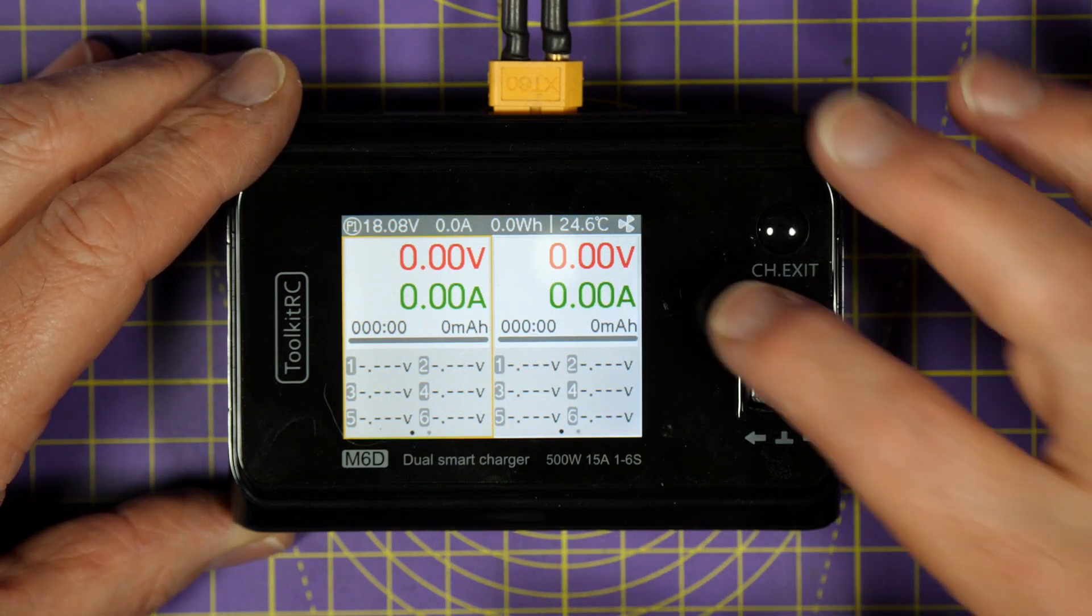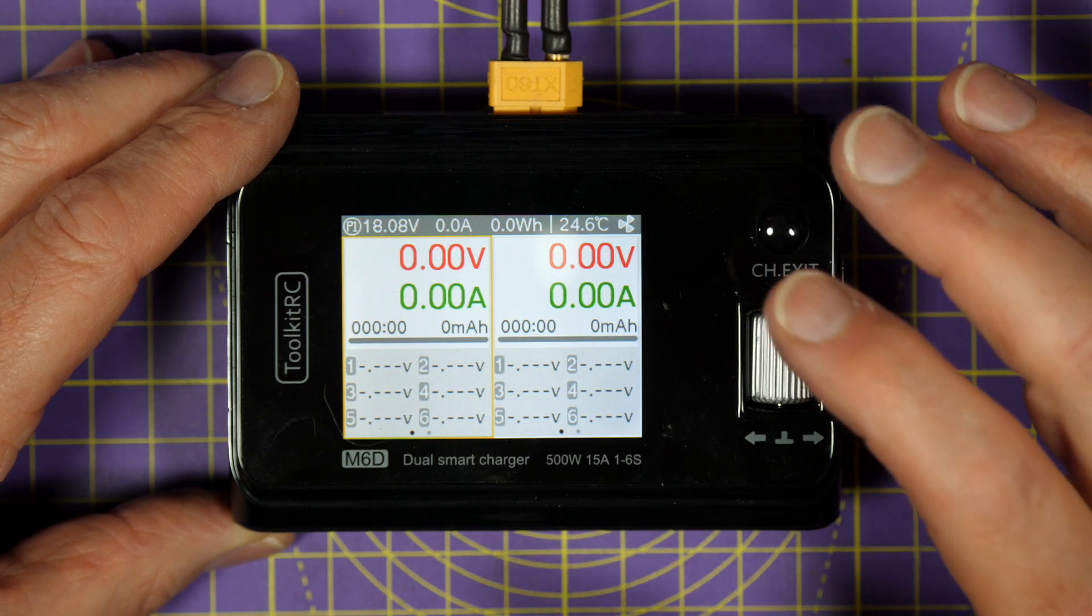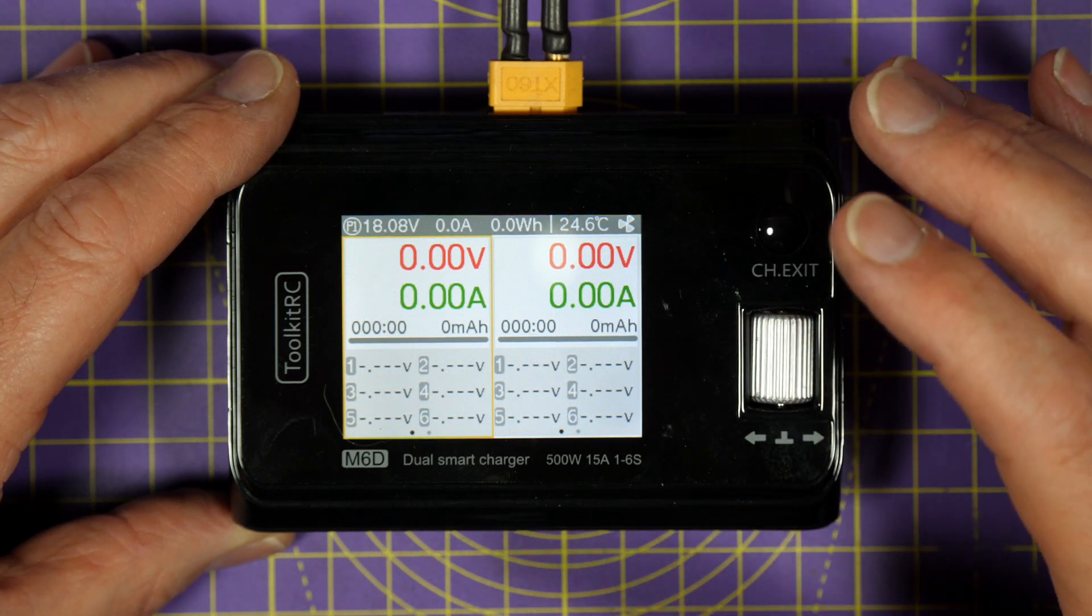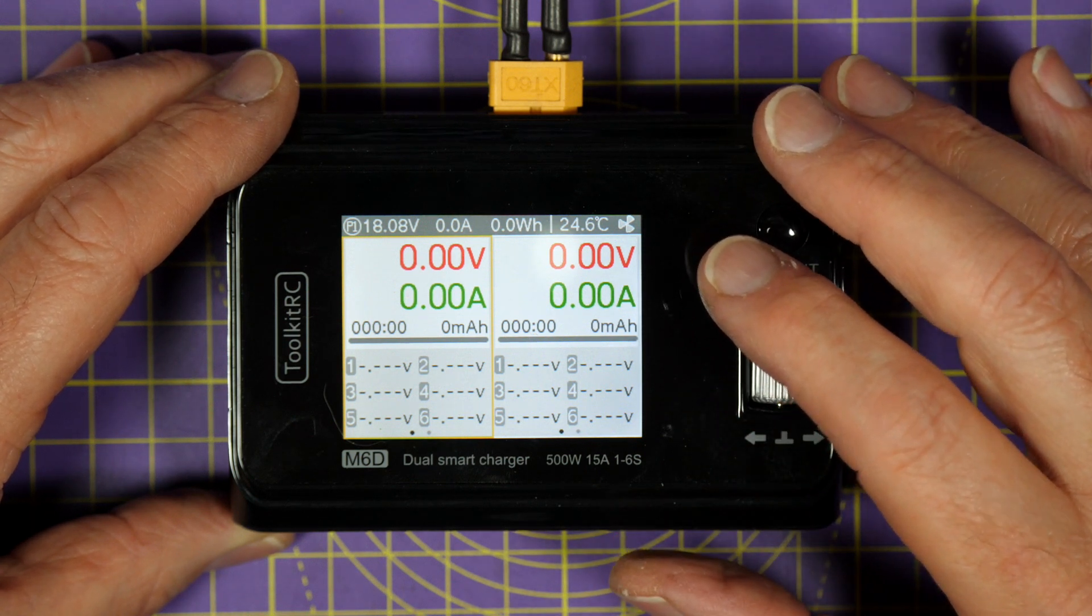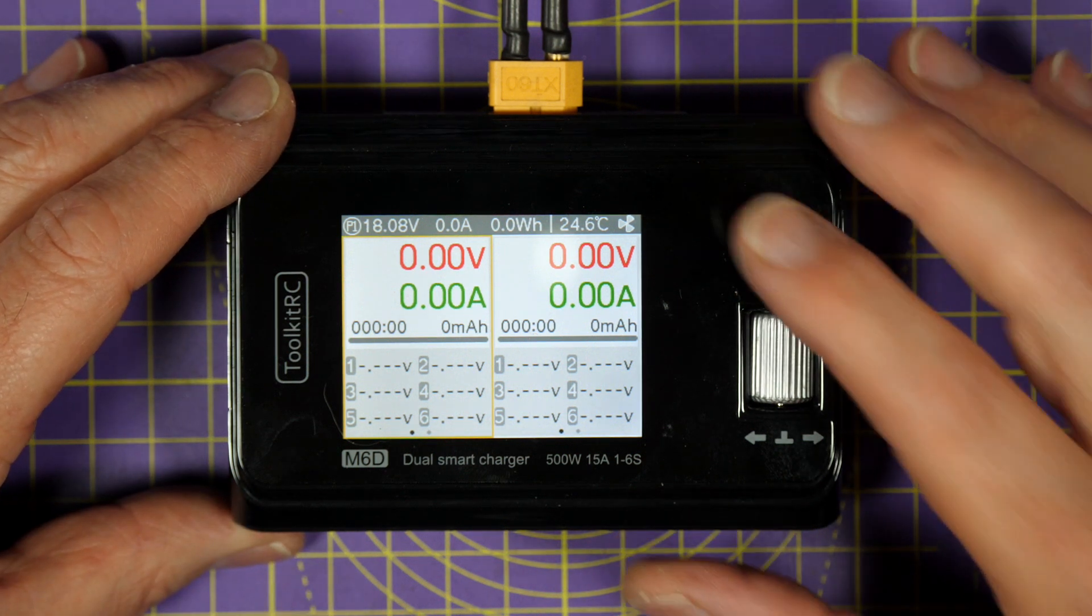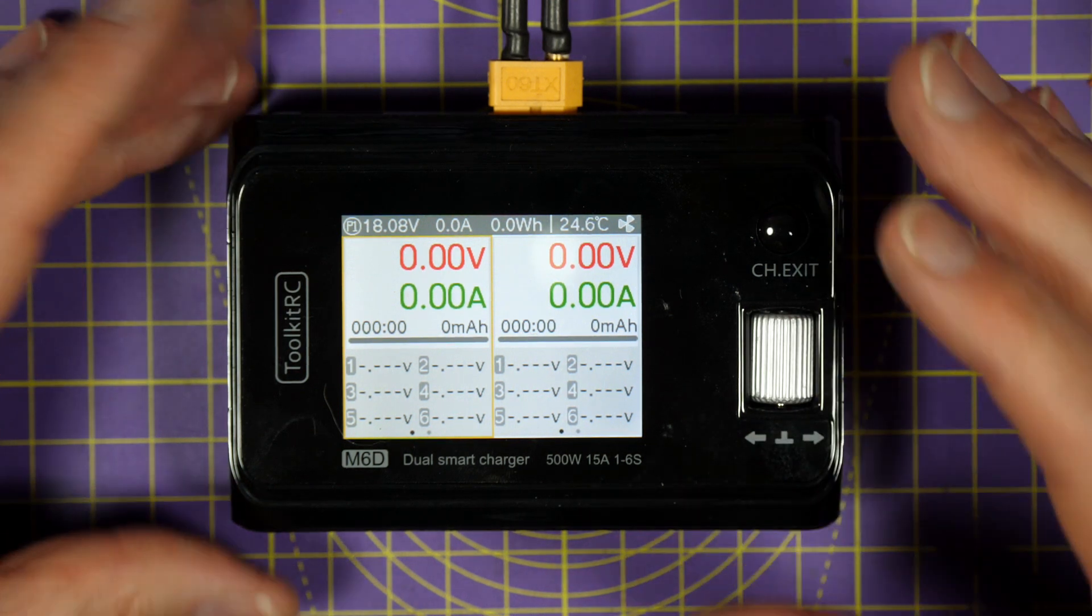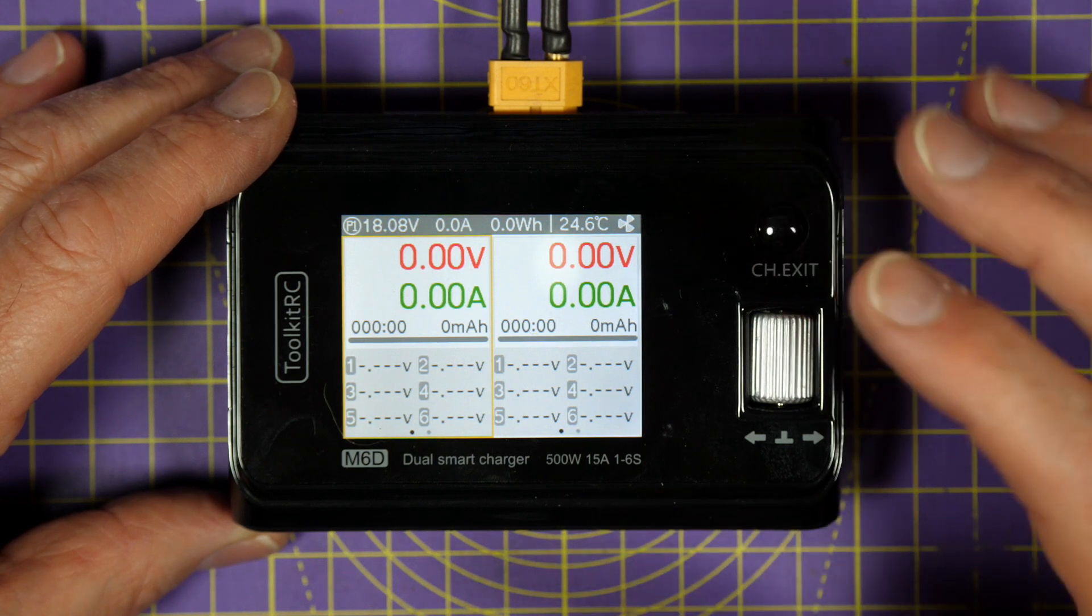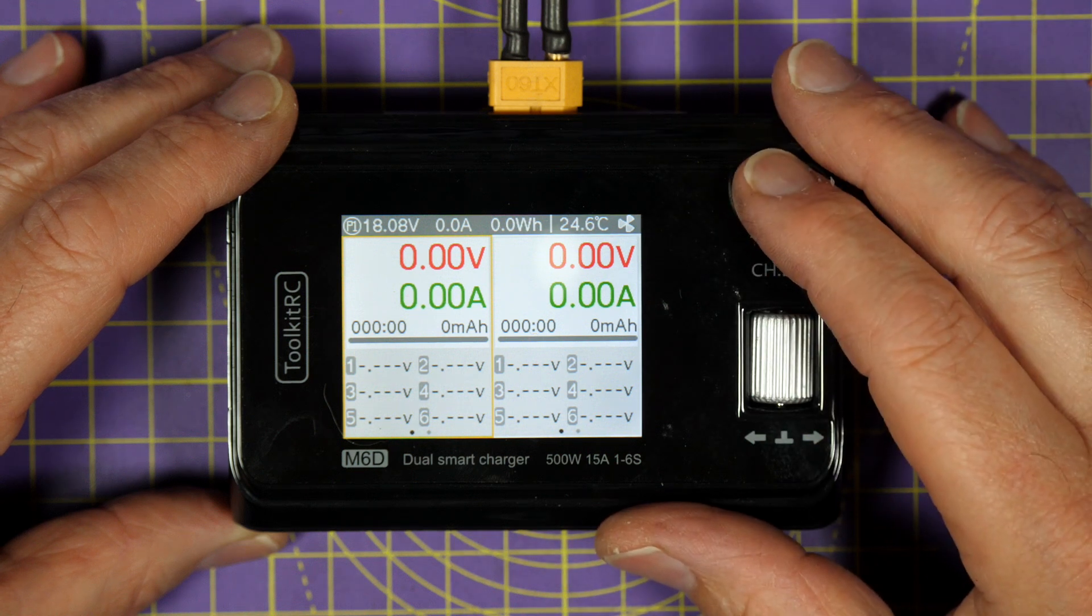A few months ago I reviewed this Toolkit RC M6D dual charger, which is now my daily portable charger. I've had some comments about the accuracy of the end voltages because the previous M8 and M6 chargers weren't great for some users. So I thought I'd go through how to calibrate it. It's dead easy and it's generally a good idea on all portable chargers. Also, I saw there was a firmware upgrade so I'll take a look at that as well.